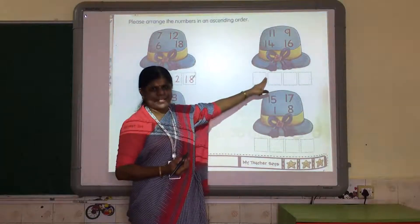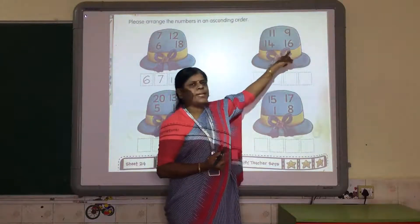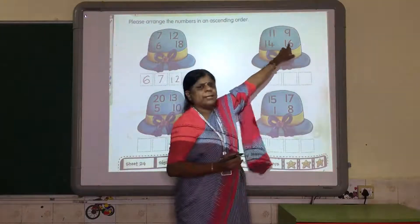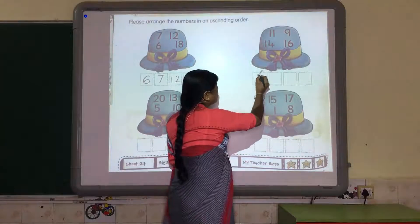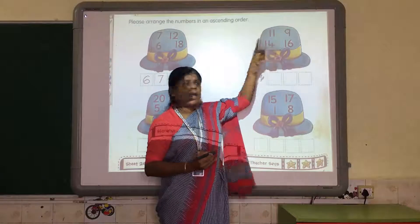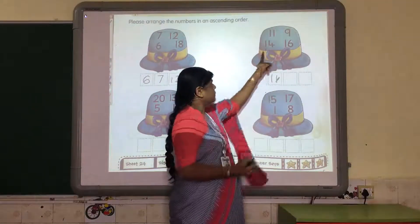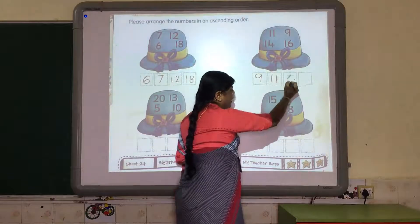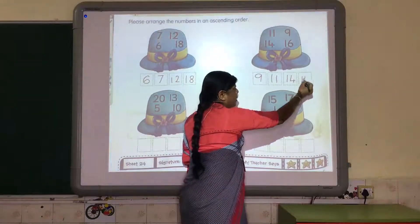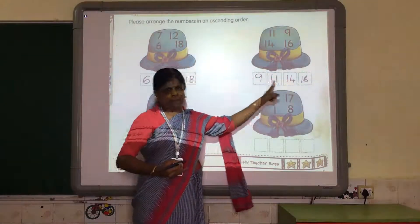In the same way, a second block is given to us. See here: 11, 9, 14, 16. So which is the smallest number? 9. After 9, we have 11. So here we write 11, then 14, then 16. So this set of numbers is written from the smallest number to the biggest number.